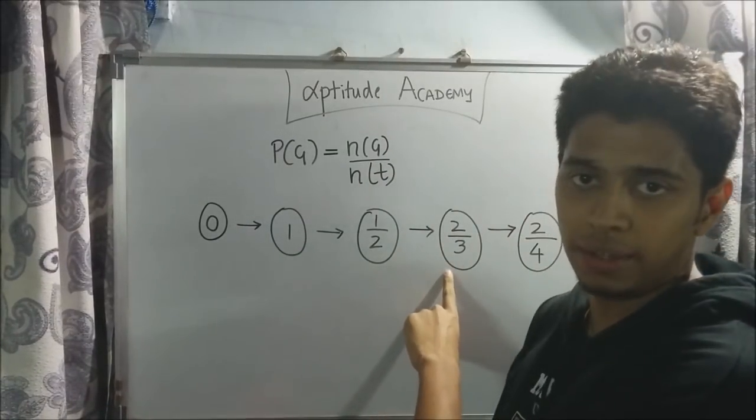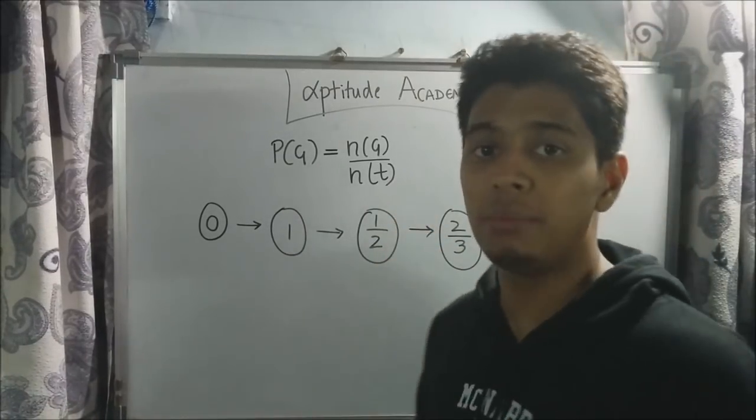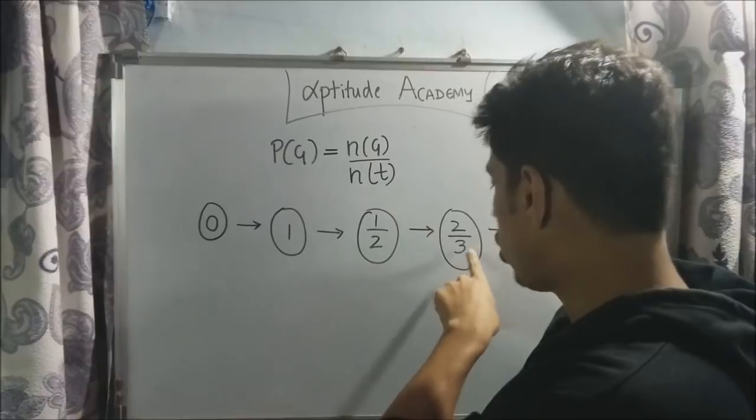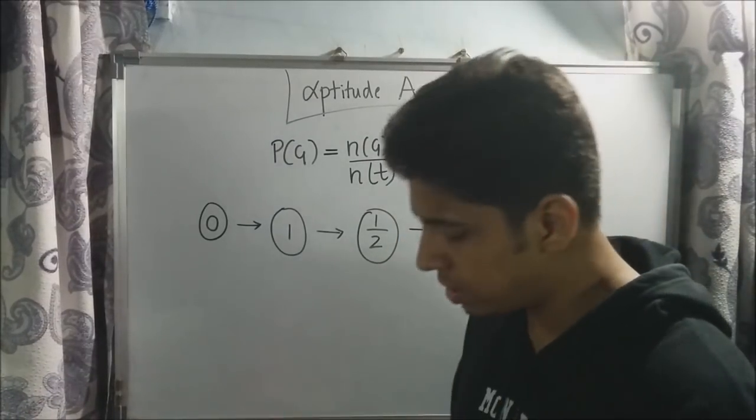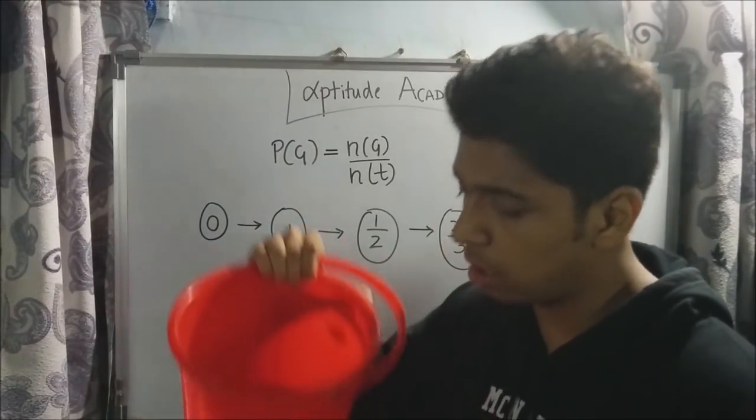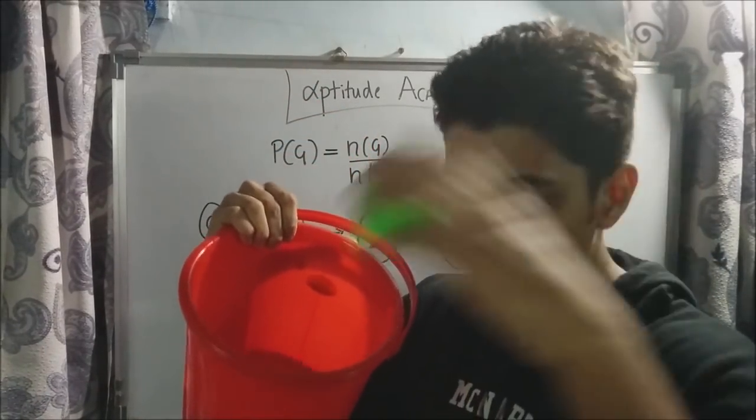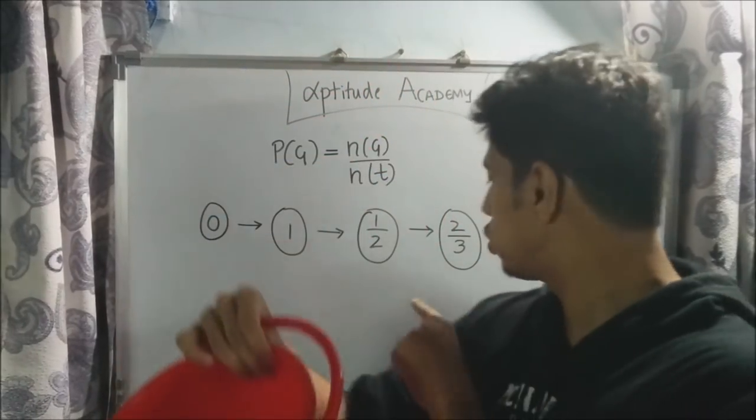Next one is two by three. Two by three, now you have got the hang of it. The number on the numerator will be the number of green balls and the number on the denominator will be the total number of balls. So now for two by three, I need two green balls. I have got just one and three total balls. So now I have got one green, so I will add another green. So I have got two green balls and totally I have got three balls. So that is two by three probability.